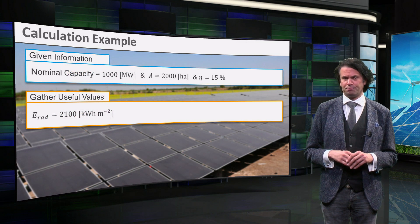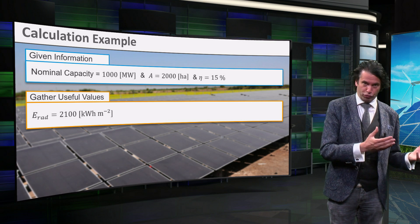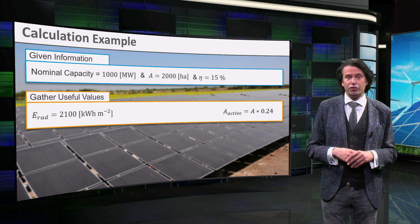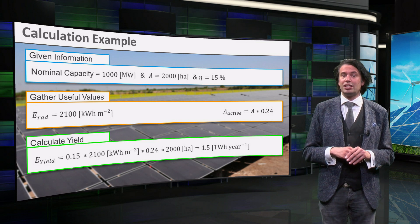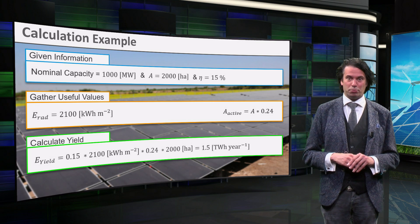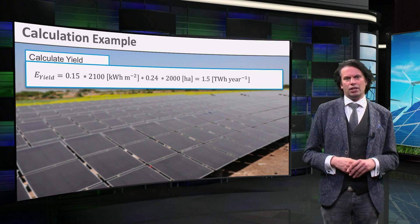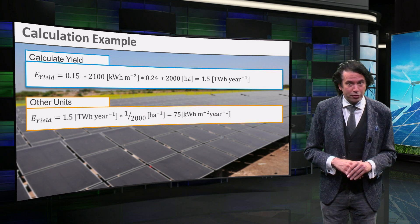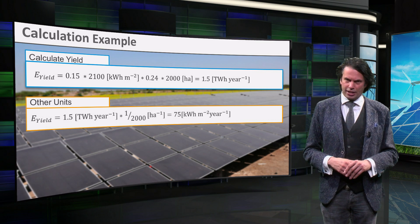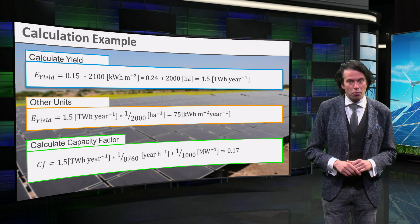We know the surface area of the farm; however, this should not be confused with the active PV module surface area, which absorbs the light. We will take an active area of 24 percent. Ultimately, the yield is 0.15 times 2100 kWh per square meter per year, times 0.24 times 2000 hectares, which equals 1.5 TWh per year. The energy density is then 1.5 TWh divided by 2000 hectares, equal to 75 kWh per square meter per year. Finally, the capacity factor is calculated by dividing the energy yield by the installed capacity multiplied by the hours in a year, resulting in a value of 0.17.